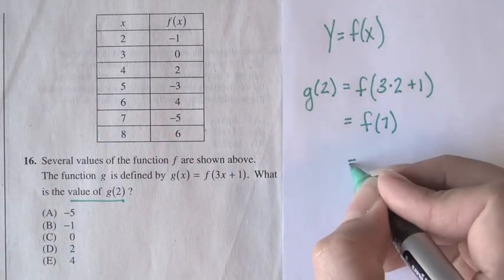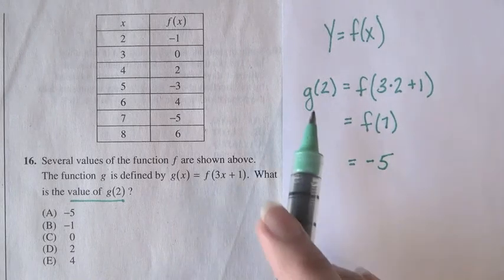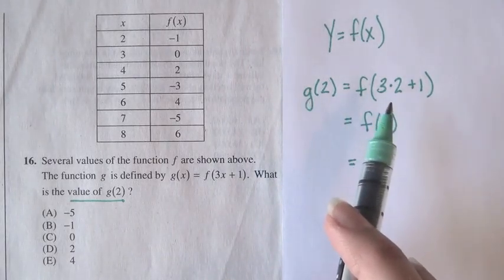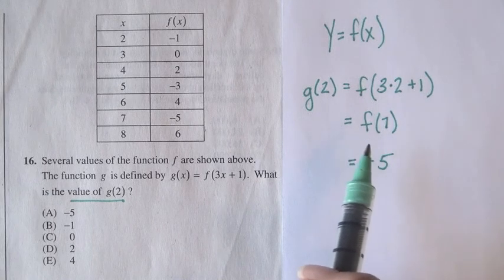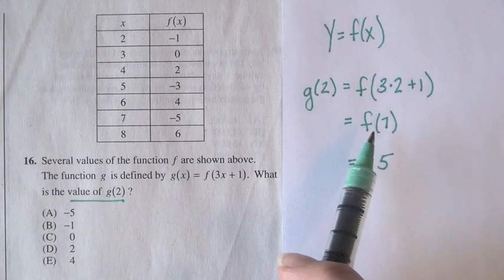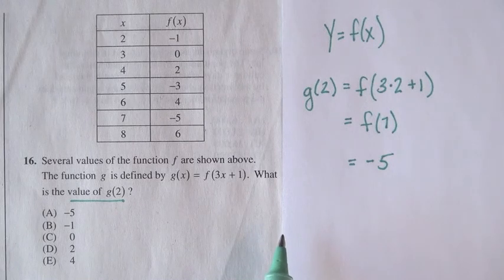So f of 7 equals negative 5. So we've gone from g of 2, put it into the g rule, got out that it's a number that needs to be plugged into the f rule. Use the chart to find f of 7. And the answer is negative 5.